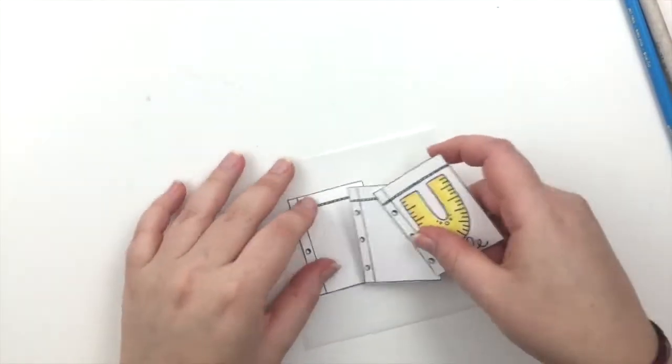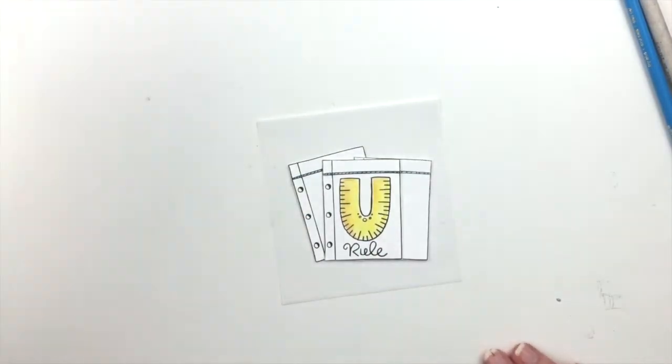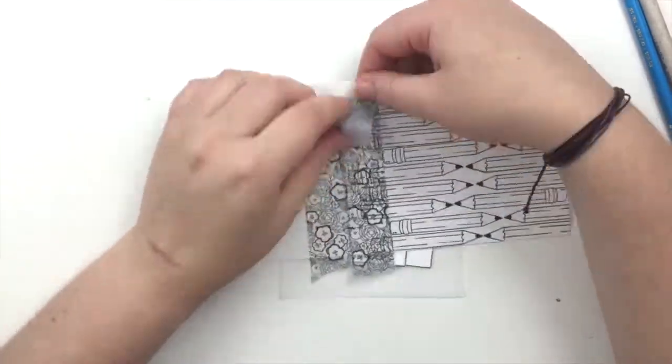I'm going to cut out some vellum. I love using vellum, it's one of my favorite things to use on cards. And I'm just going to arrange those three pieces of paper to how I like them.